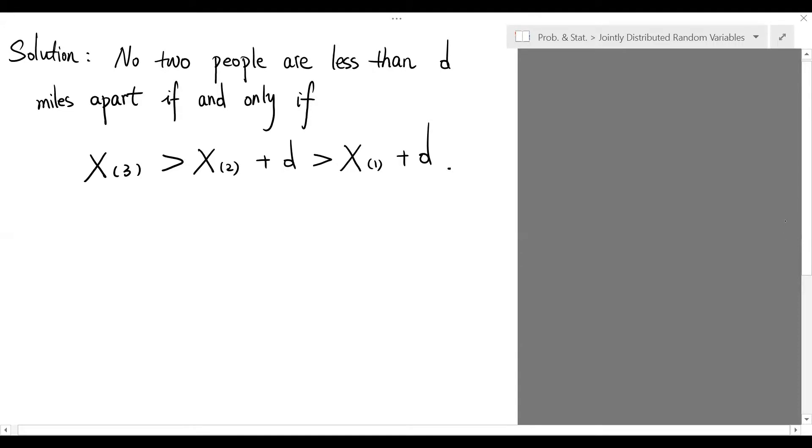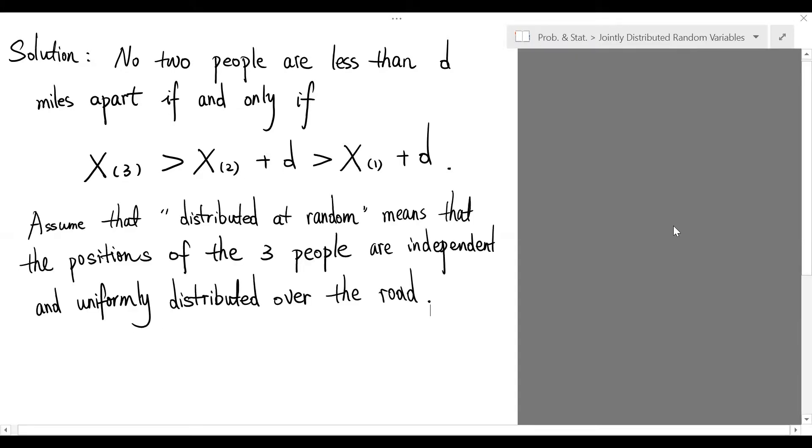To summarize, we observe that no two people are less than d miles apart if and only if the order statistics satisfy the following condition. For simplicity, we just assume that distributed at random means that the position of the three people are independent and uniformly distributed over the road.